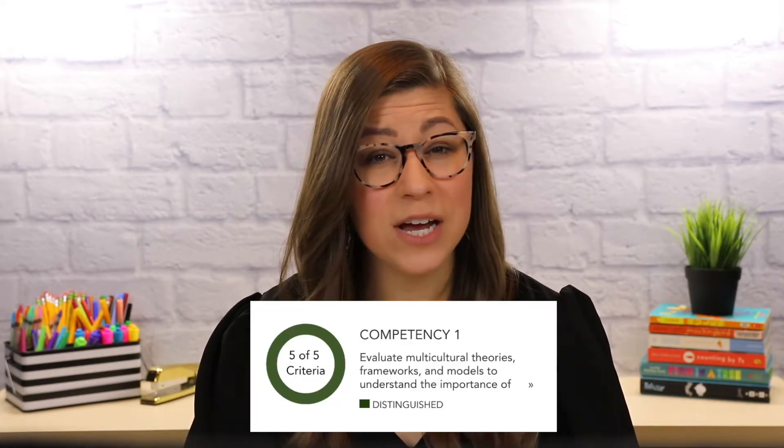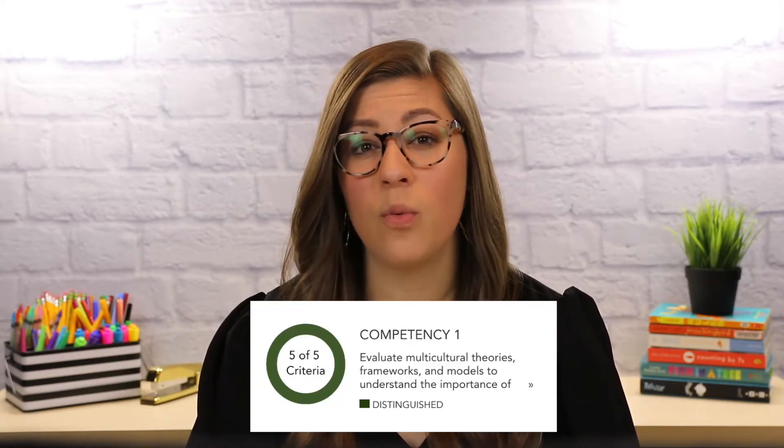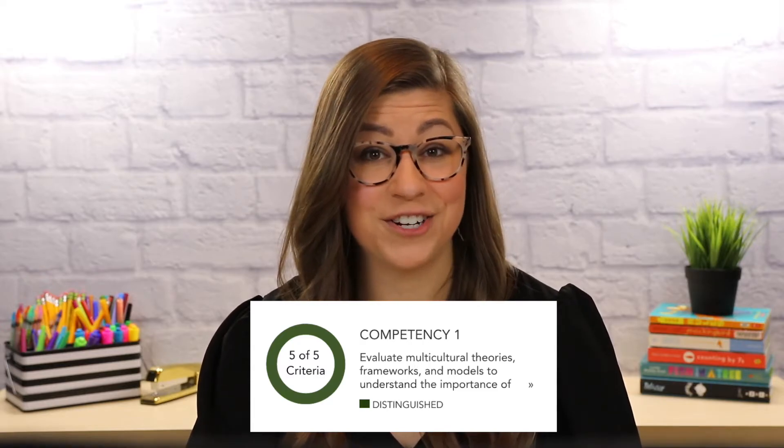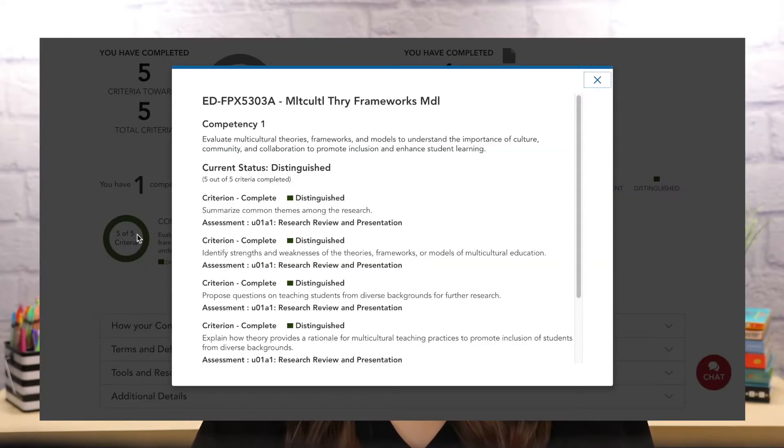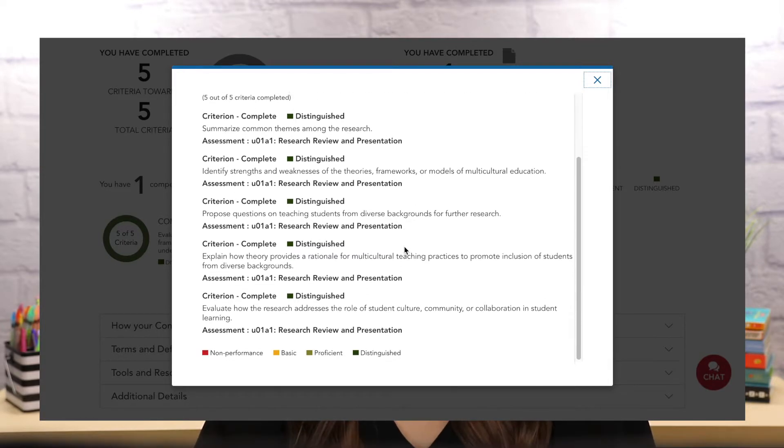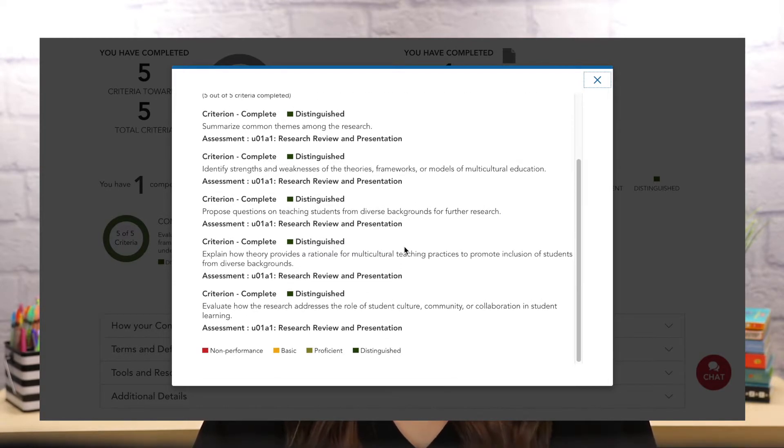For example, if I earn a score of distinguished, then the circle will begin to fill in a dark green color. I can even click on each competency and see which criteria I have already completed, and I can see what my performance was for each one. As a visual learner, the colors really help me understand my performance for each competency so that I can focus on the specific areas that I need to improve on.